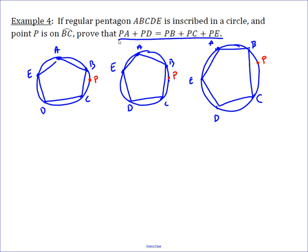To prove this, we're going to use Ptolemy's theorem twice, and we're going to use something we proved in a previous problem that had to do with an isosceles triangle inscribed in a circle.